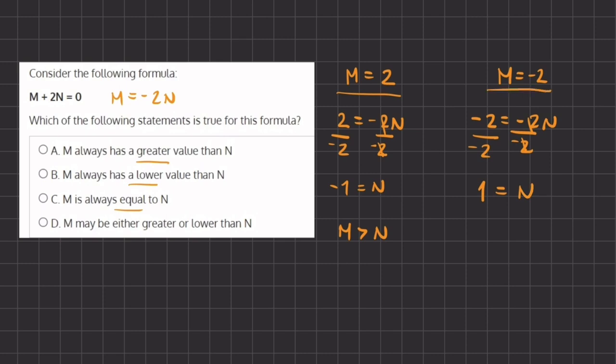And in this case, when m equals negative 2, n is greater, so m is less than n.